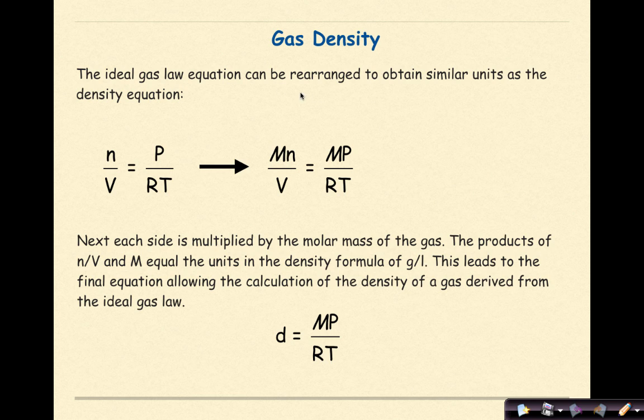The ideal gas law equation can be rearranged to obtain similar units as the density equation. Let's recall the formula for the ideal gas law, PV equals NRT. I want to get to this situation where we're going to have moles of gas over volume, and then we'll proceed on to density.